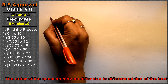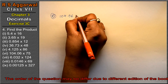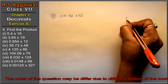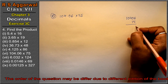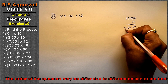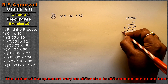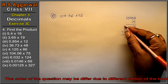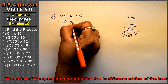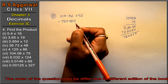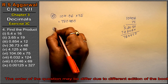Let's do the 6th part. 6th part is 104.06 into 75. So 10406 multiplied by 75. 5 × 6 is 30, 5 × 4 is 20, 5 × 1 is 5. 7 × 6 is 42, 7 × 4 is 28, and 7 × 1 is 7. So here: 0, 5, 4, 10 carry 1, 7, 8 and 7 — that means 780450. Placing the point 2 digits from the right gives 7804.50. This is the answer.